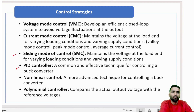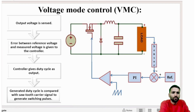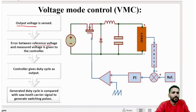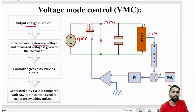In voltage mode control, the underlying concept is that we sense the output voltage and compare it with a reference voltage — the voltage we desire as output. For example, suppose the converter is running freely with a 48 V input and the output is 30 V, but we want 33 V. The reference becomes 33 V, the measured voltage is 30 V, and an error of 3 V is generated.